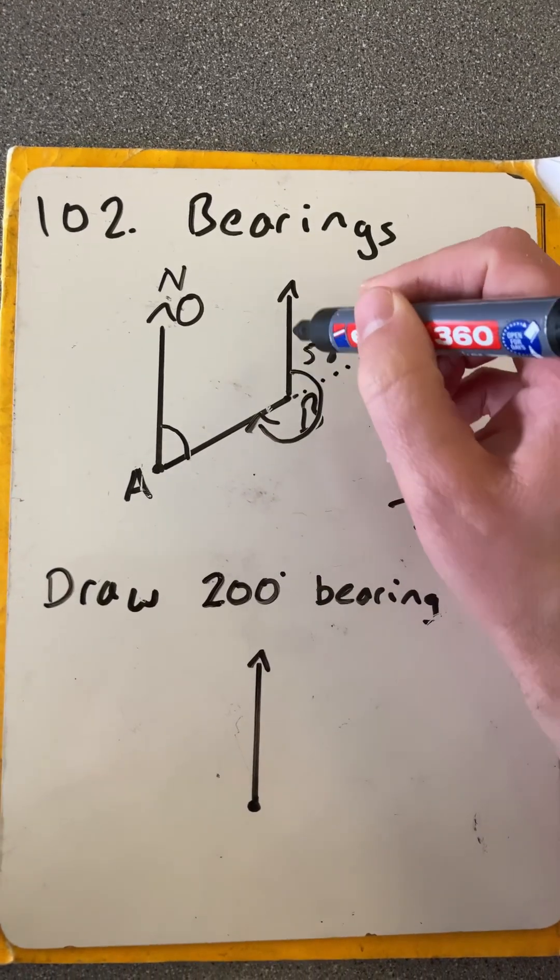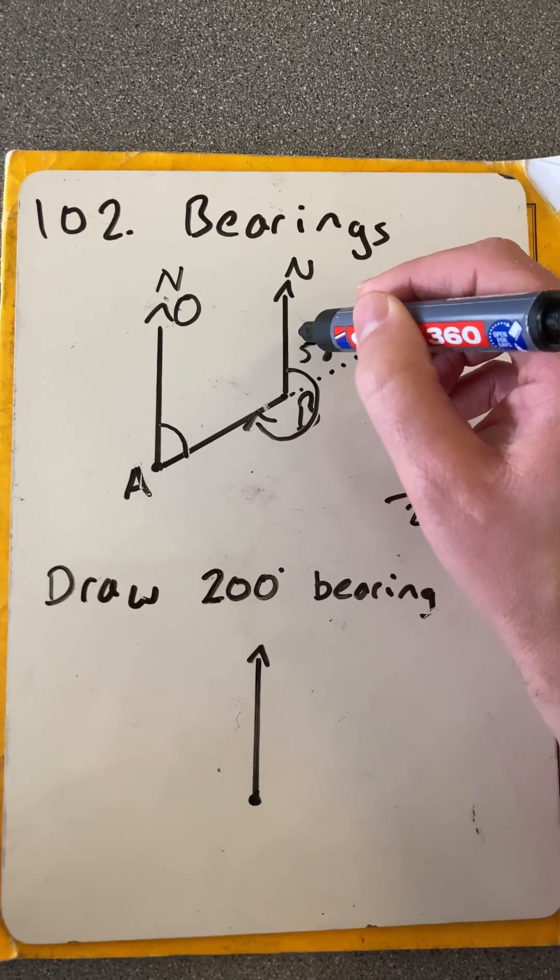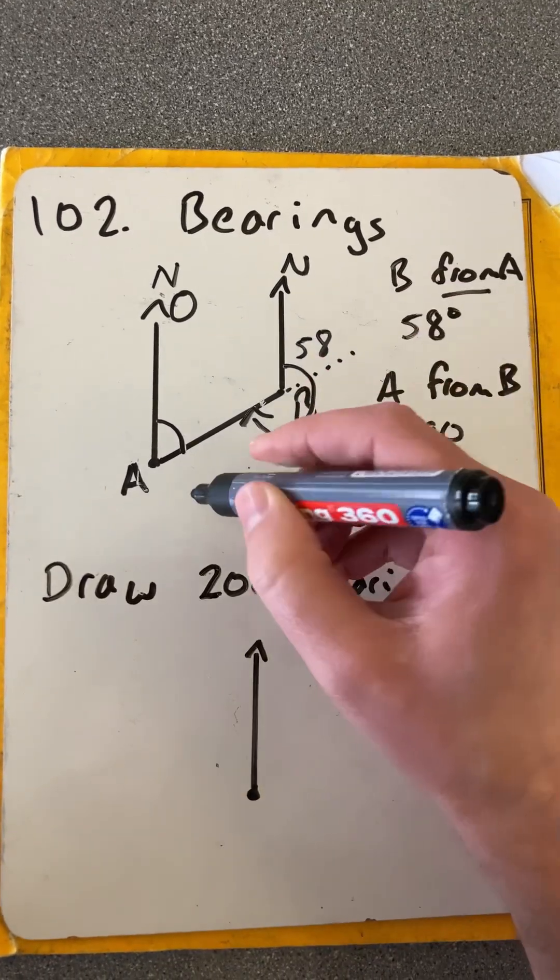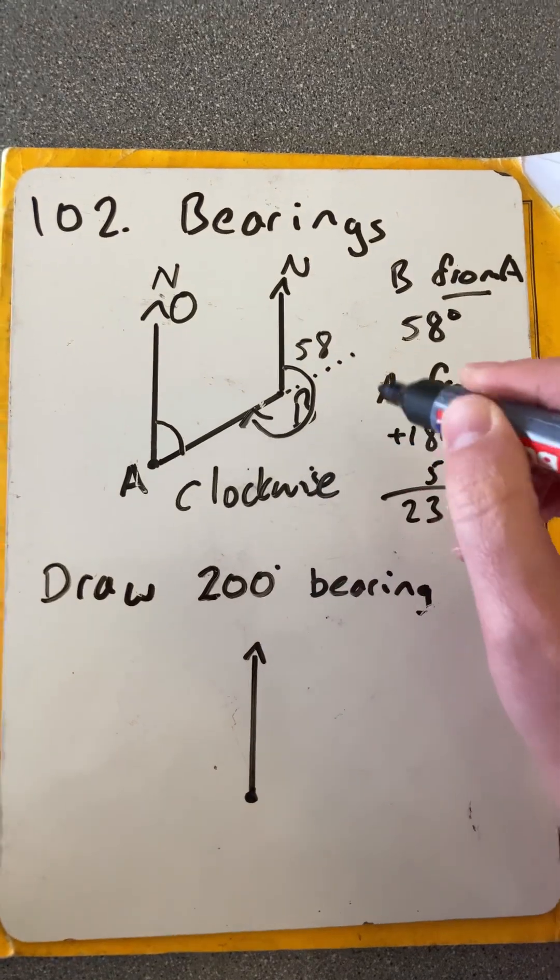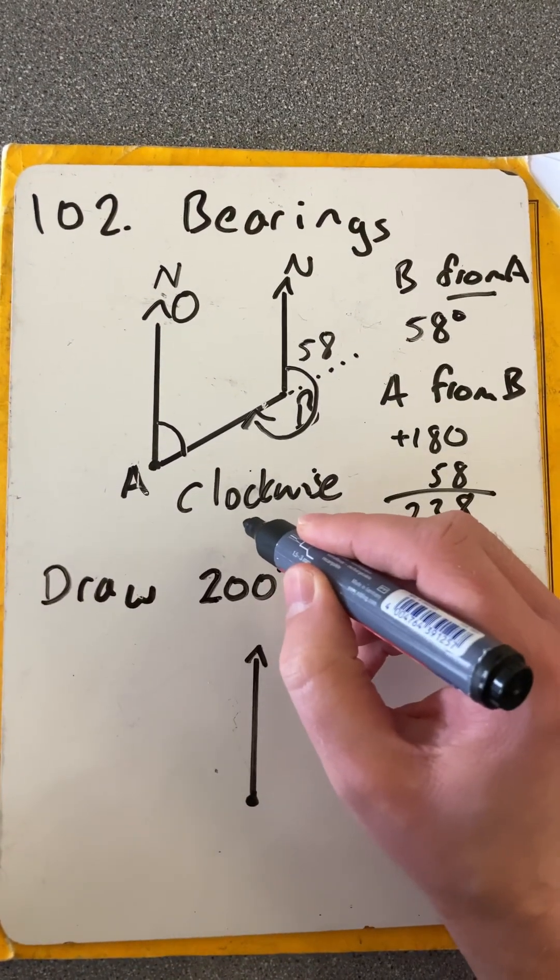So to go from B, reading from north there, from zero, going clockwise. Always read clockwise from north.